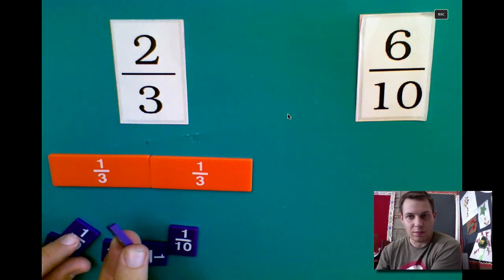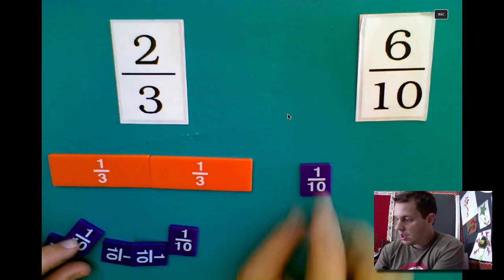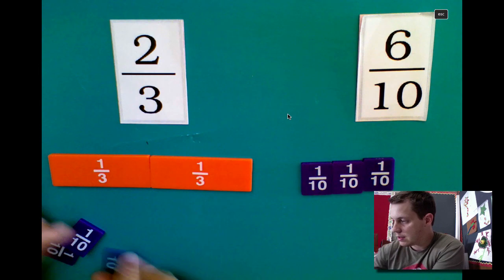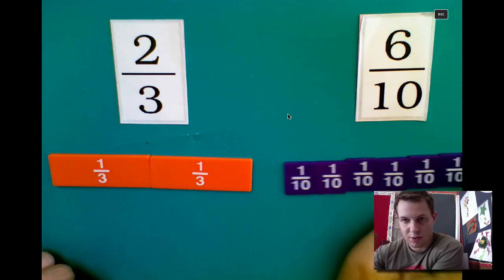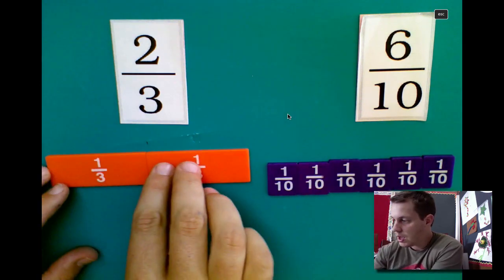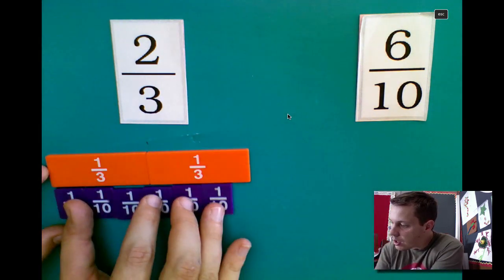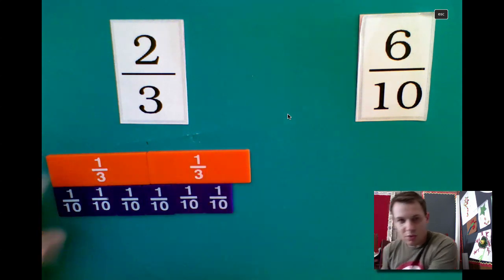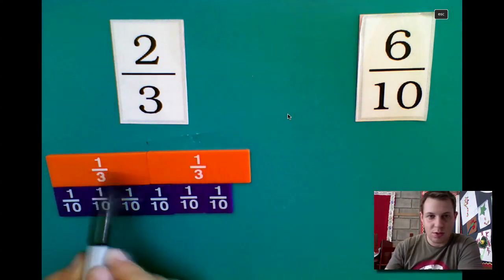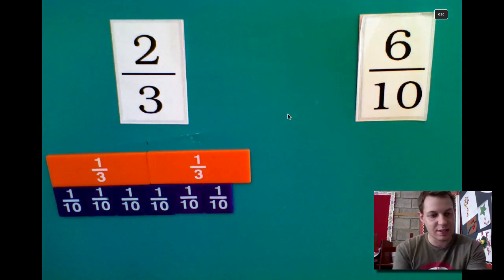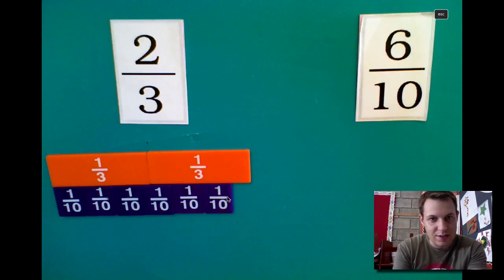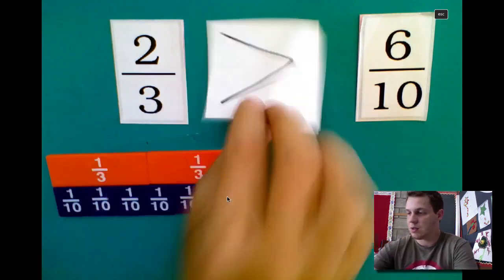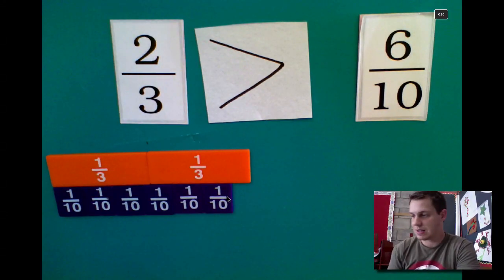Now notice that my tenths are a lot smaller. That's because the denominator is 10, so we had to cut that bar into 10 pieces. Over here we have 6/10, and over here we have 2/3. To really compare them, we got to put them right next to each other. Once we do that, we can see right away that 2/3 is just a little bit bigger than 6/10. So for that reason, we can put the greater than symbol and say that 2/3 is greater than 6/10.